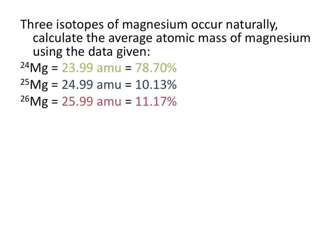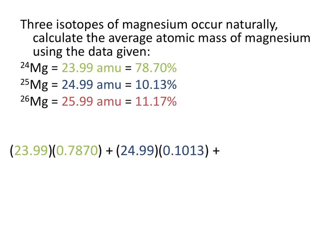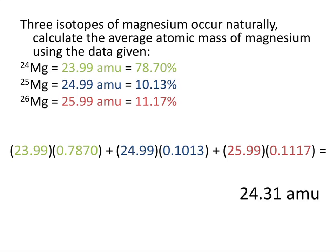Let's look at another example. Three isotopes of magnesium occur naturally. Calculate the average atomic mass of magnesium using the data given. We take the atomic mass of the first isotope times its percent abundance written as a decimal, add to that the mass of the second isotope, 24.99, times its percent abundance, 0.1013, and then add the mass of the third naturally occurring isotope, 25.99, times its percent abundance, 0.1117. That gives us an average atomic mass of magnesium of 24.31 AMU.